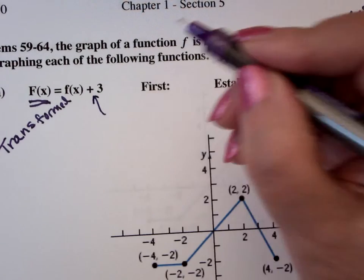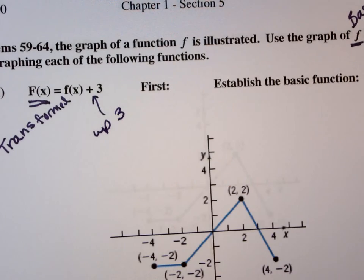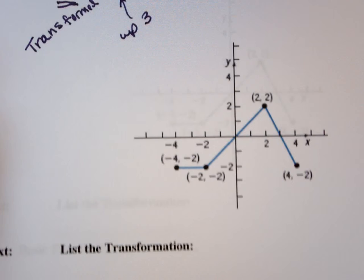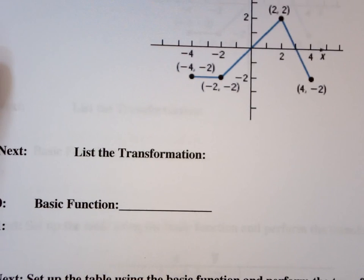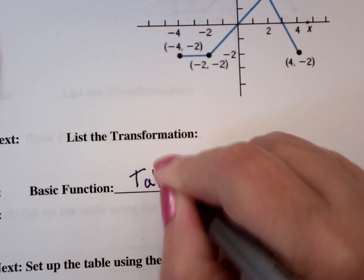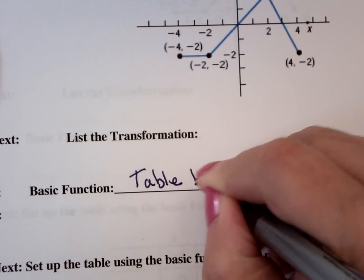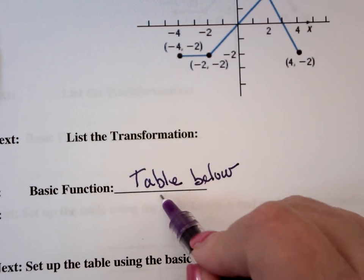So this says that if I'm going to list a transformation, this is just up three. So that says, to list a transformation, the basic function is just the table or you could say the graph.